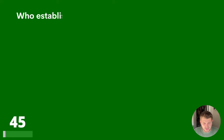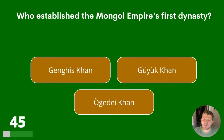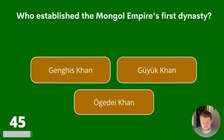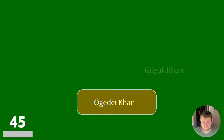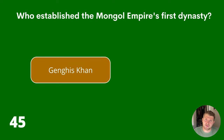Question 45. Who established the Mongol Empire's first dynasty? Genghis Khan, Guyuk Khan or Ogedei Khan? The answer is Genghis Khan.